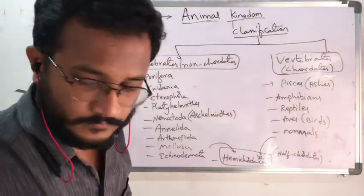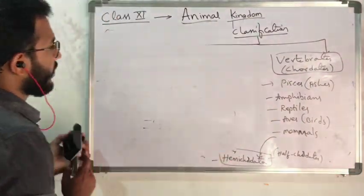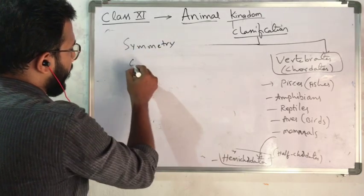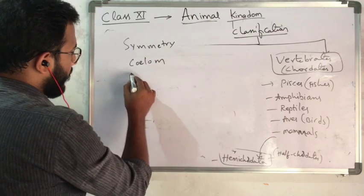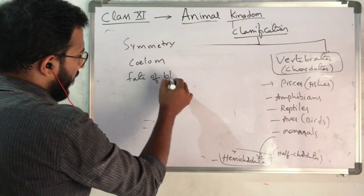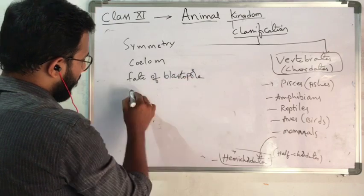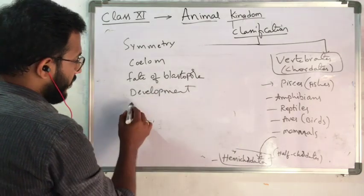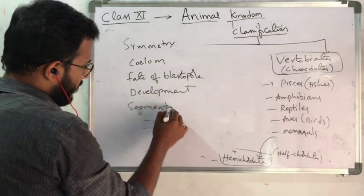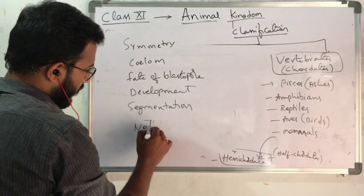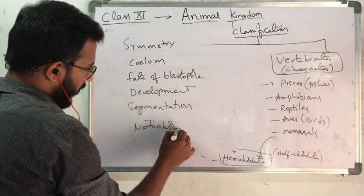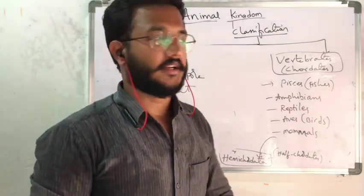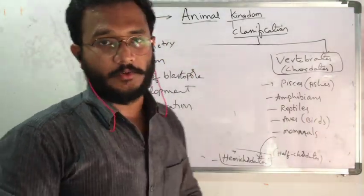In the next video, we will discuss symmetry — how many types are there — and coelom, fate of blastopore, development, segmentation, and notochord — how it is developed, in which animals notochord is present and in which animals it is absent. We will see all that in detail in the next video. Thank you.